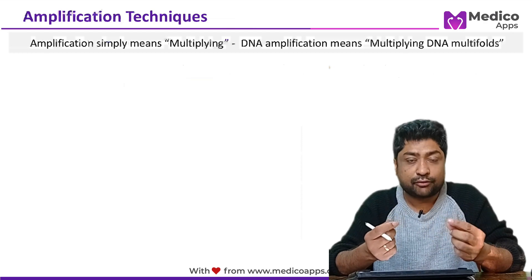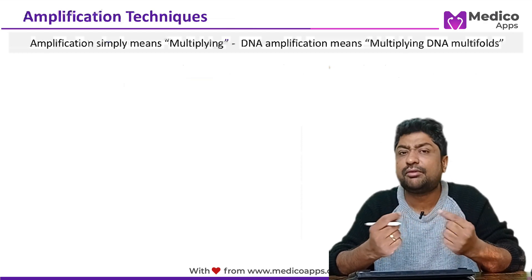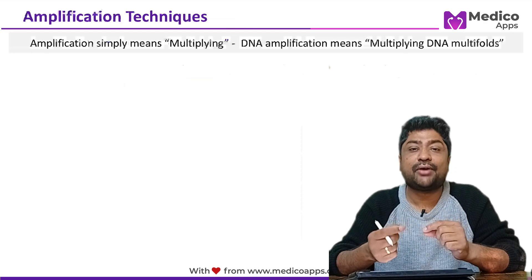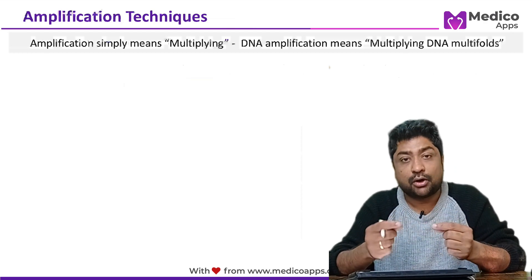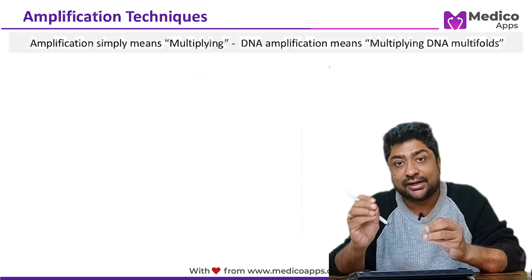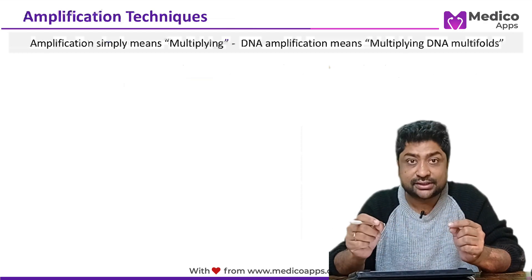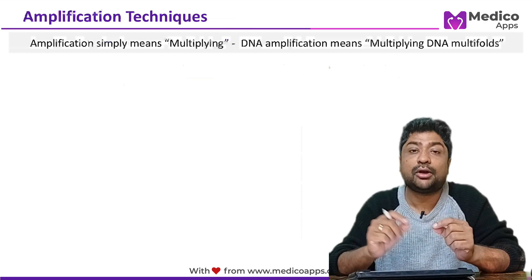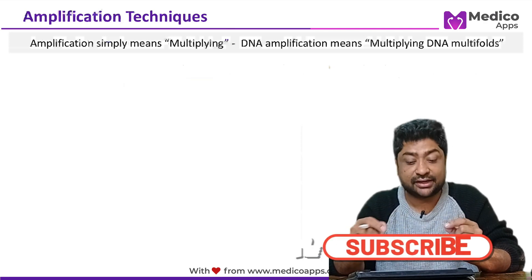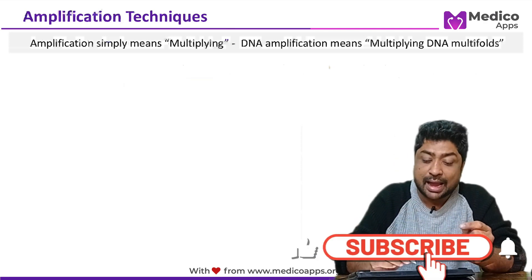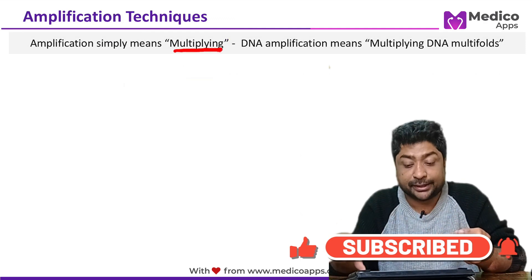Originally, the viral DNA taken from the patient's blood may be very small in quantity. If you amplify it, you are able to measure it and determine whether viral DNA is present or not, making your diagnosis. So PCR is a type of amplification technique — it simply means multiplying the amount of DNA.